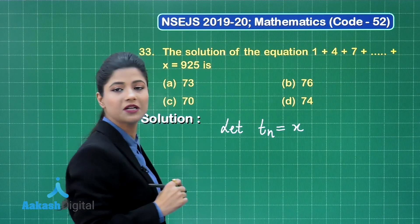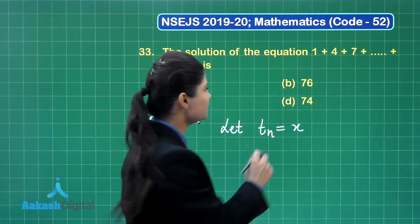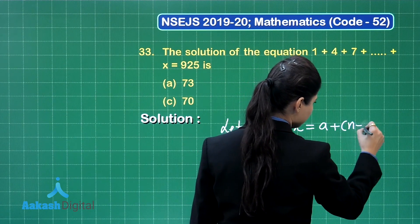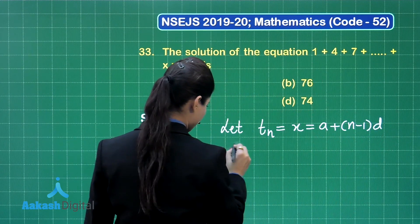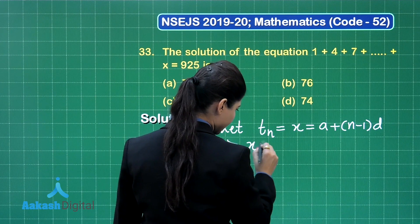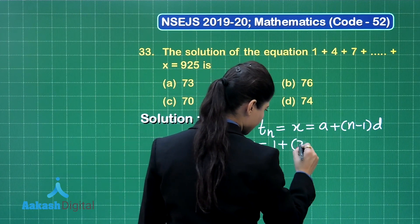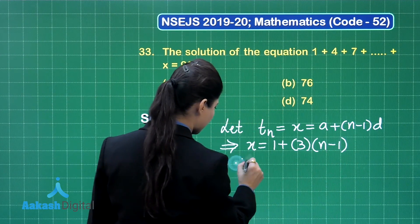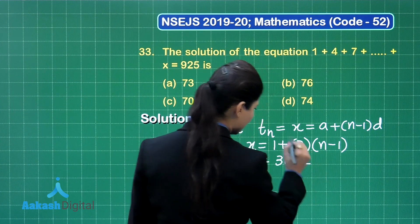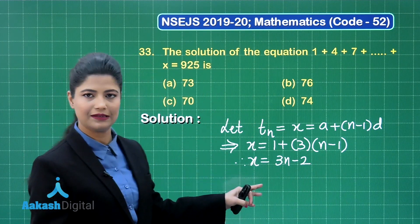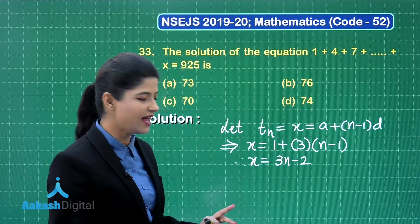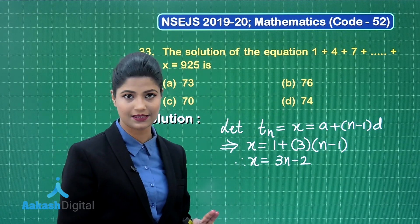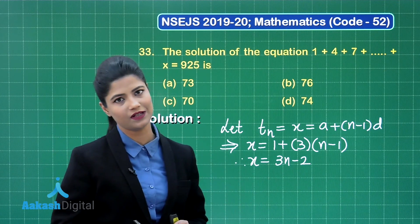The nth term of this AP is x, where first term a is 1 and common difference d can be obtained using the formula a plus (n minus 1)d. So x equals 1 plus 3(n minus 1), which simplifies to x equal to 3n minus 2. If we know the value of n, the number of terms, we can find x.